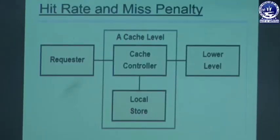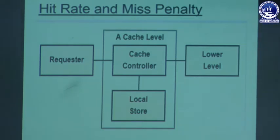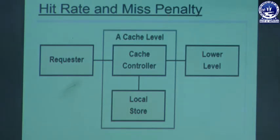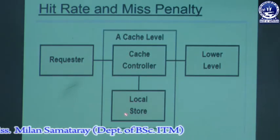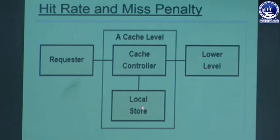The requester — which is our processor — sends a request to the cache memory as an address. We use the concept of cache memory to increase performance, and here we are using two levels of cache memory, or multi-level cache memory, because this also increases performance. In this cache level there is a cache controller and a local store. We need the local store because to store something we need a location.